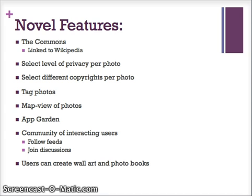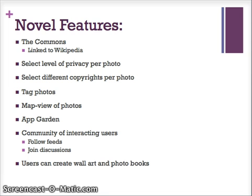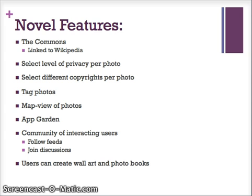Flickr differentiates itself from other social media and photo hosting websites in quite a few ways. Flickr has a feature known as the Commons, in which media that is within the public domain is accessible to everyone. Additionally, users are able to choose whether or not they want people to be able to post their media elsewhere, and under what circumstances this is to occur. Users are able to tag their photos in a similar way to other social media website tags, and this allows other users to search a tag and find relevant images.